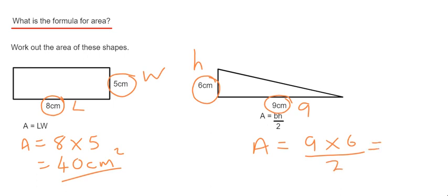9 times 6 is 54 and then 54 divided by 2 is 27 cm squared.